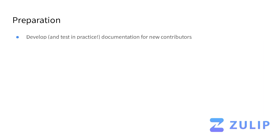What does it take for a project to have a great experience with GSoC? The first piece is developing documentation for new contributors to really walk them through everything they need to do to get started, and really testing that documentation in practice with new folks. Because you won't know upfront all the places people might get confused or stuck, so you'll need to iterate and improve your documentation and processes to make it smooth and simple.